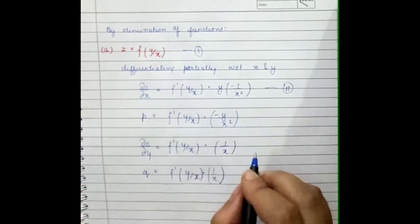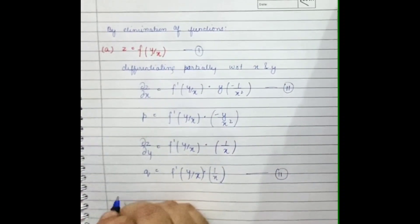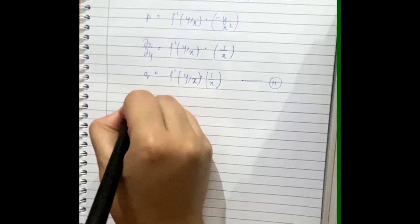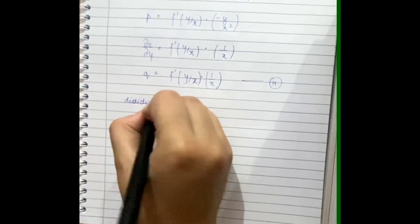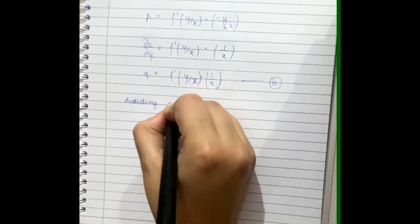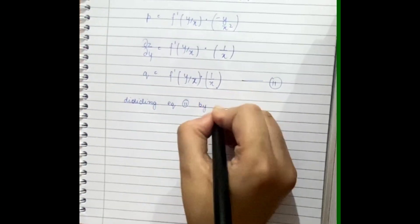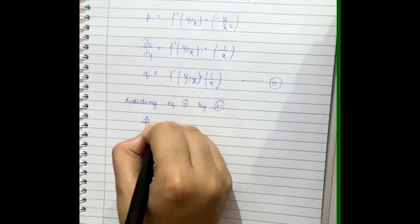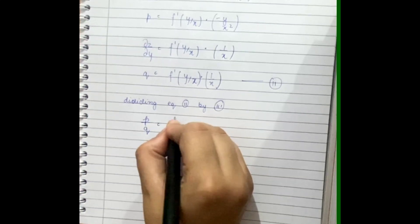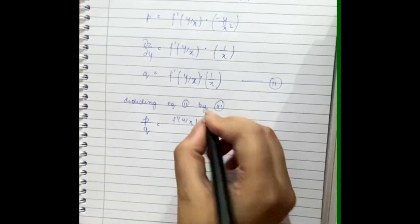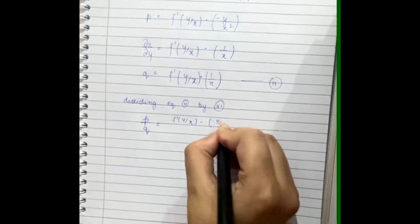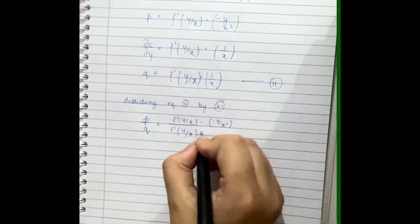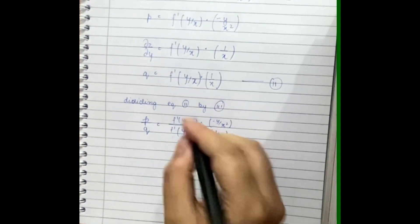And this as equation one. Now let's divide equation two by three. We will get p by q equal to f dash y by x into minus y by x square, divided by f dash y by x, 1 by x into 1 by x.